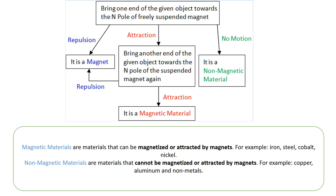To summarize the three cases: first, if the rod end near the north pole repels, the rod is a magnet. Second, if the north pole attracts the rod, that means the rod is not a magnet — it is a magnetic material. Third, if there is neither attraction nor repulsion — no motion — then the rod is a non-magnetic material. It is not iron, steel, nickel, or cobalt. Magnet only attracts iron, steel, nickel, and cobalt.